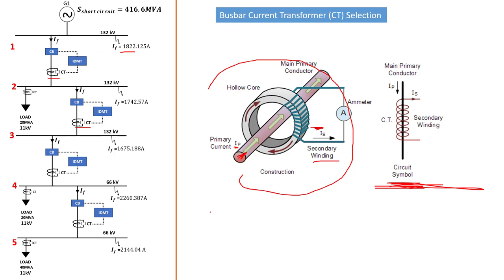The current transformer must step down from a high primary current to a low-level current. This basically means standard transformer properties apply — since the current is going down, the voltage must go up to maintain power balance: power in must equal power out. So as your current is stepping down, the voltage must go up — VA in must equal VA out.